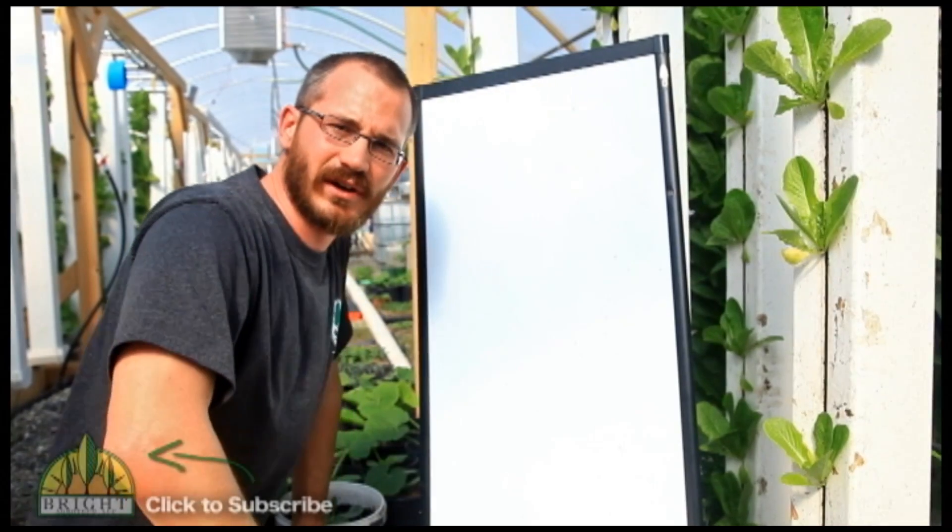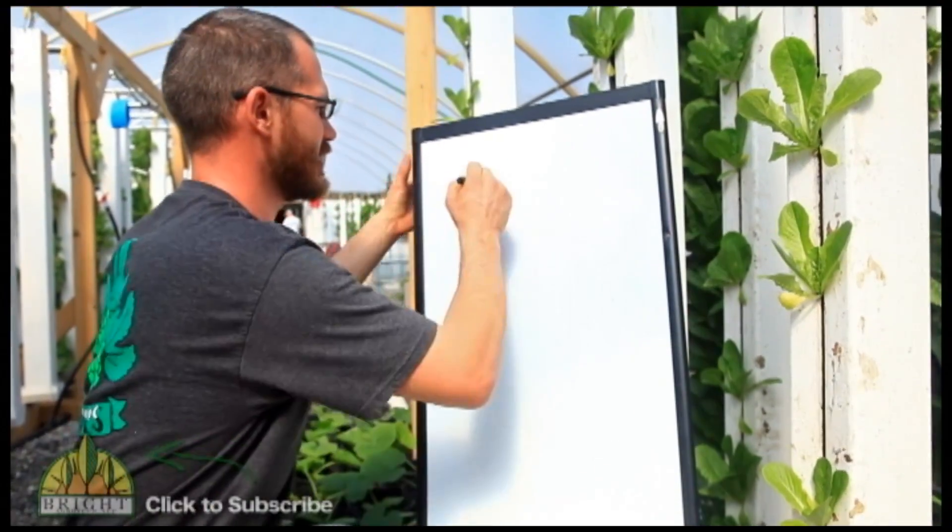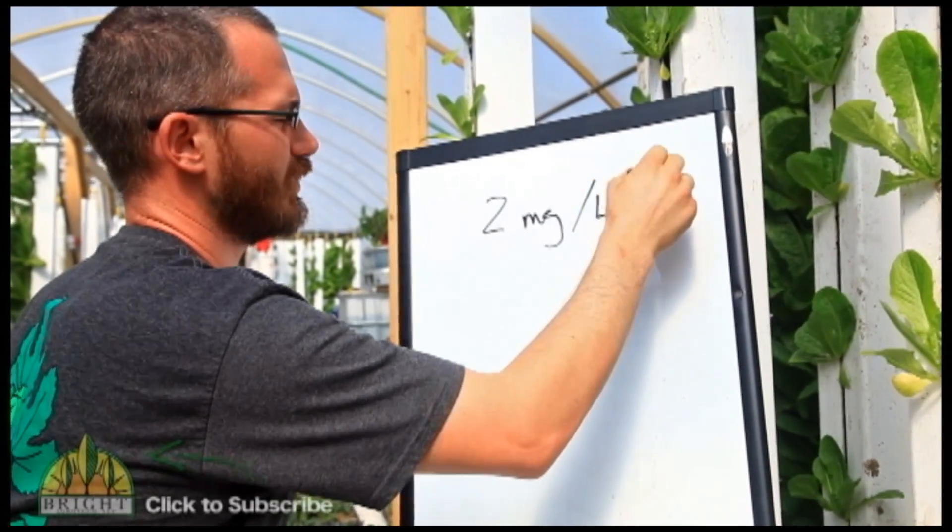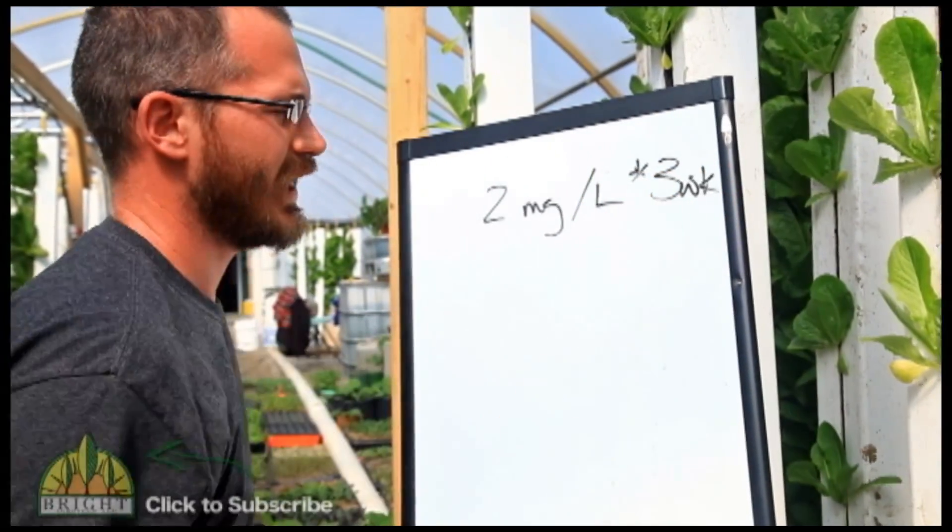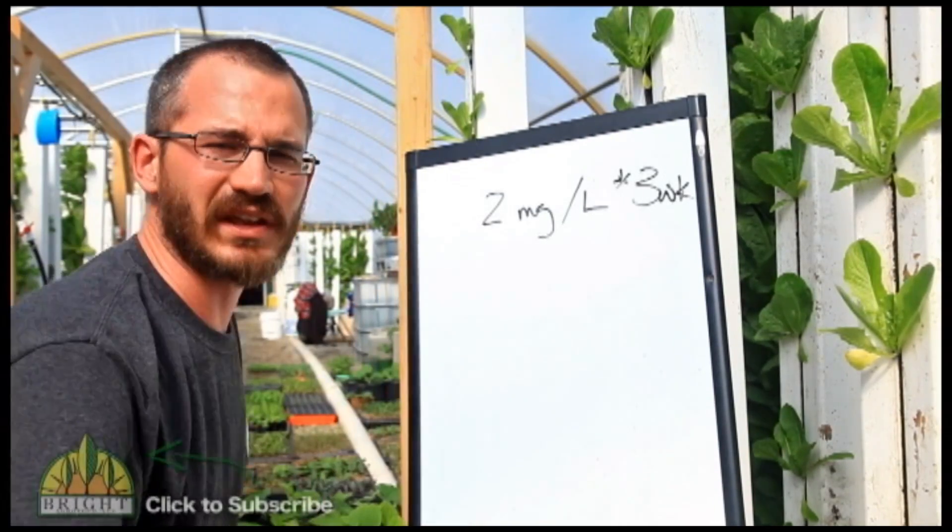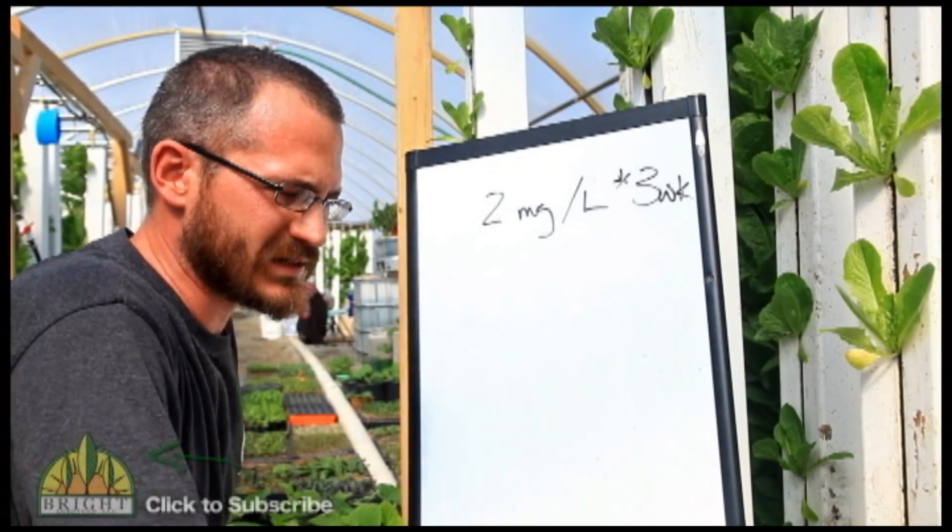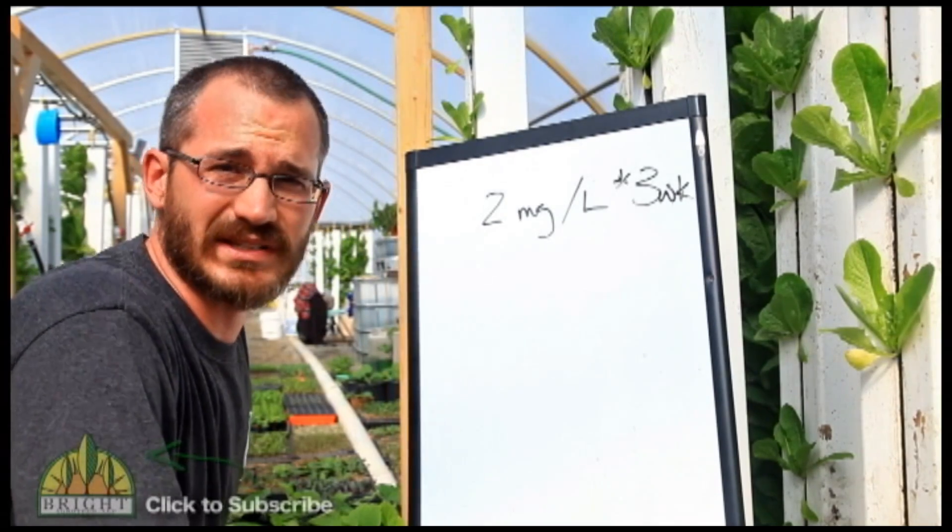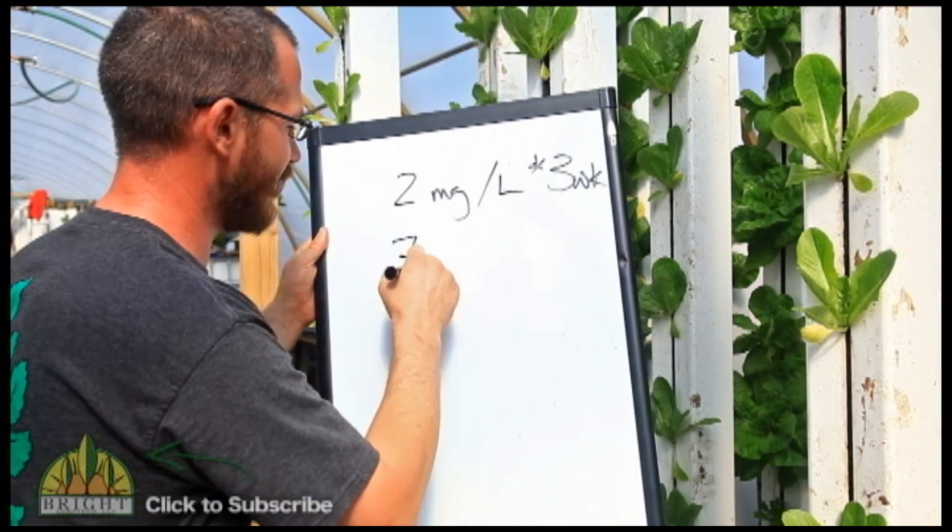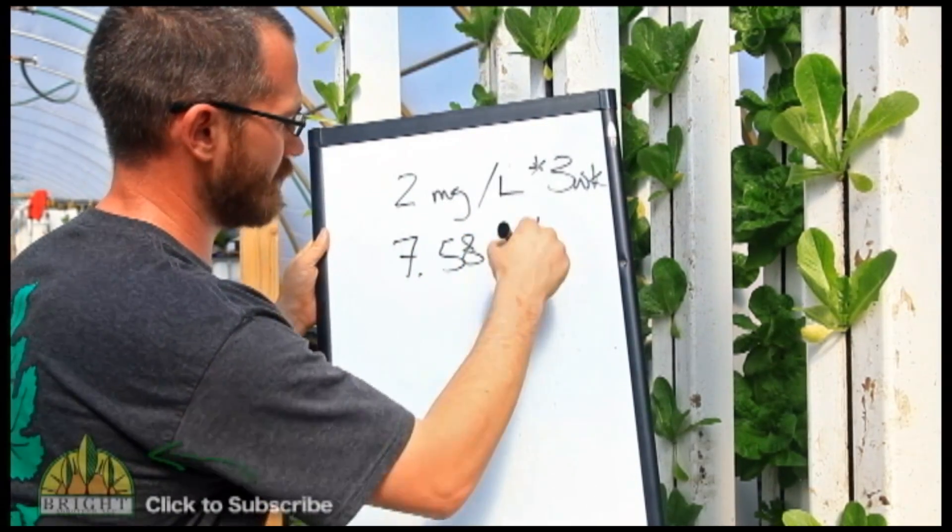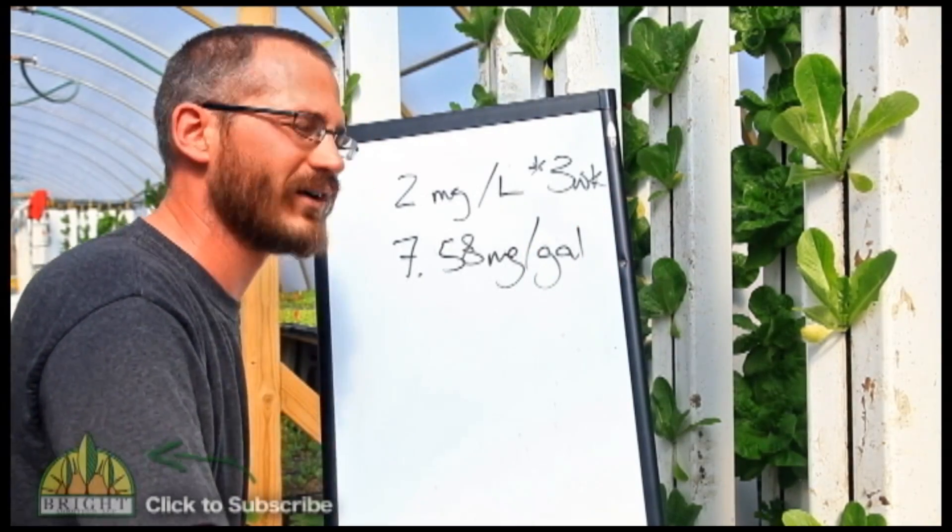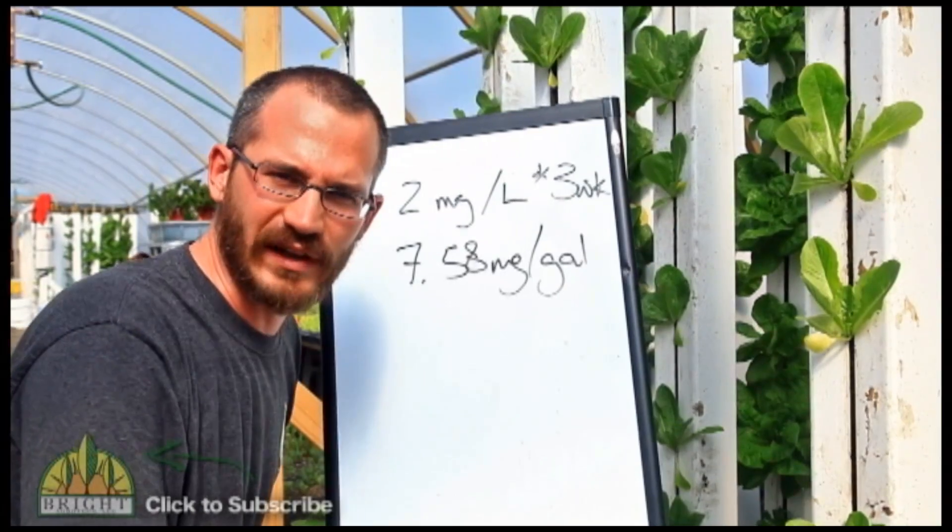The industry standard for chelated iron is two milligrams per liter every three weeks. This was developed by Dr. Ricosi down at UVI. This is basically the dosage that he used and it's kind of been what everyone's used as the standard ever since. Two milligrams per liter is about the equivalent of 7.58 milligrams per gallon. For all of us here in the U.S. who do all of our calculations by gallon, this is our starting point.